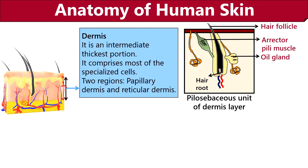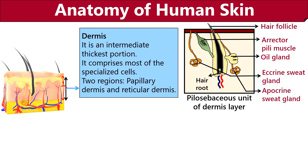Two kinds of sweat glands are present in our body: the eccrine gland and the apocrine gland. The eccrine sweat gland is located all over the body, whereas the apocrine sweat gland is found in hairy skin like the armpits and groin area. Besides the pilosebaceous unit, the dermis layer also comprises blood capillaries that supply blood to the cells in the dermis and epidermis. Fibroblasts produce collagen, elastin, and reticular fibers along the extracellular matrix, and mast cells generate an inflammatory response.